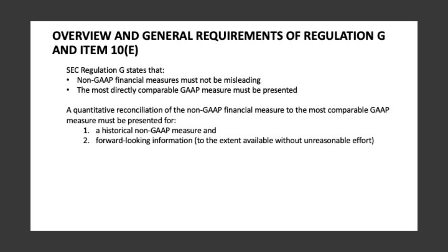Section 3: Overview and General Requirements of Regulation G and Item 10(e). SEC Regulation G states that non-GAAP financial measures must not be misleading. The most directly comparable GAAP measure must be presented. A quantitative reconciliation of the non-GAAP financial measure to the most comparable GAAP measure must be submitted for: (1) a historical non-GAAP measure, and (2) forward-looking information to the extent available without unreasonable effort.